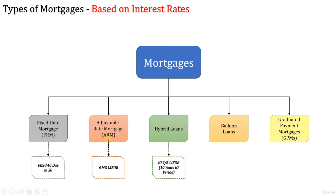The next one is adjustable rate mortgage, or ARM. An adjustable rate mortgage has an interest rate that changes based on changing market rates and economic trends. ARMs usually have an initial period during which the rate won't change. For example, the interest rates for ARMs can be tied to one-year U.S. Treasury bills, rates on certificates of deposits, the London Interbank Offered Rate LIBOR, COFI, or other indexes.